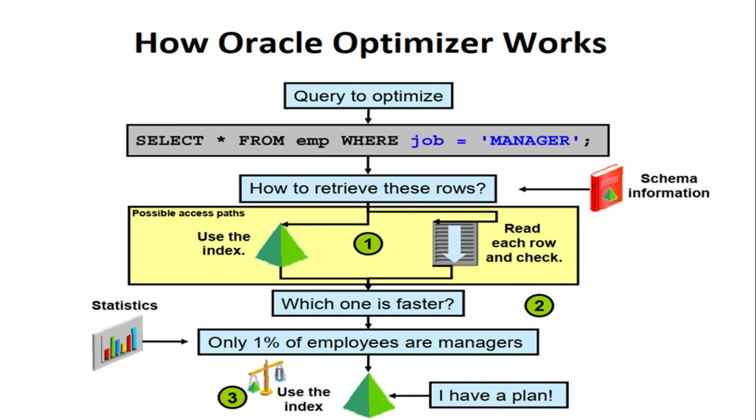How Oracle Optimizer works: In this pictorial diagram, you can see a query to optimize: SELECT * FROM EMPLOYEE WHERE JOB = 'MANAGER'. The optimizer considers schema information on how to retrieve rows, possible access paths like using an index or reading each row, and statistics to determine which is faster. If statistics show only 1% of employees are managers, then use the index. This is how the Oracle Optimizer works.